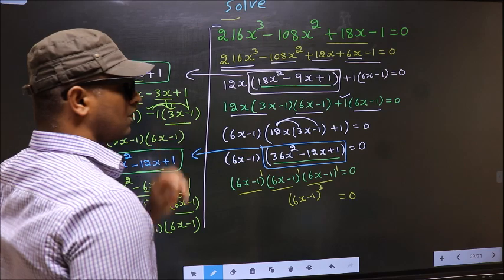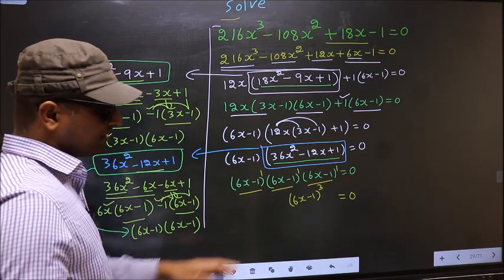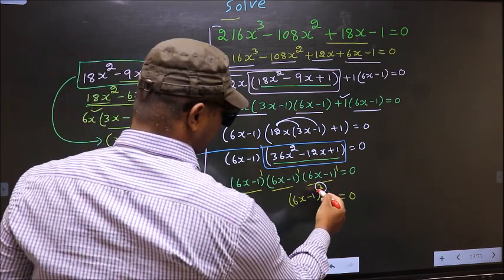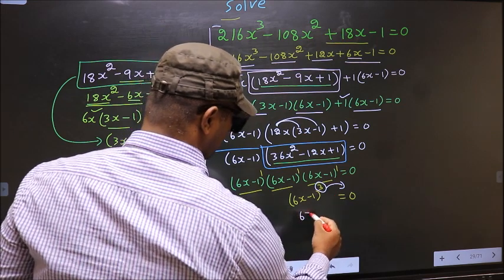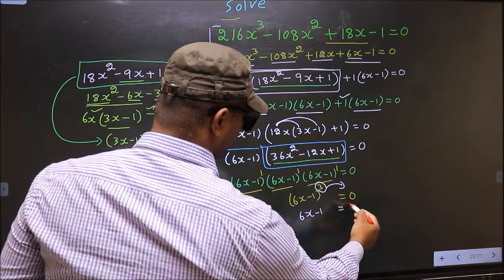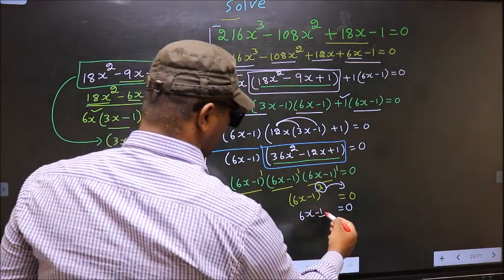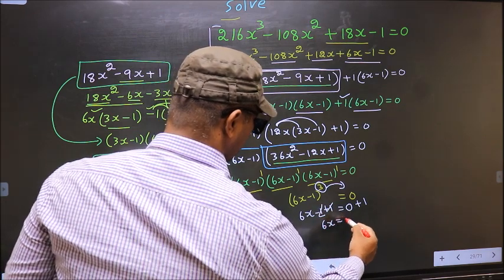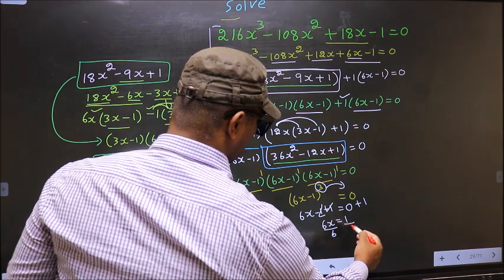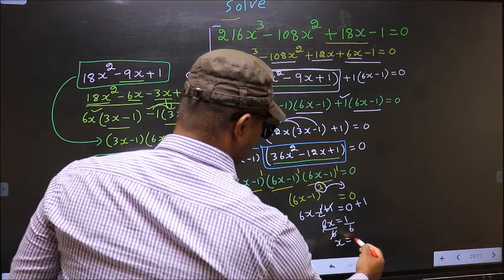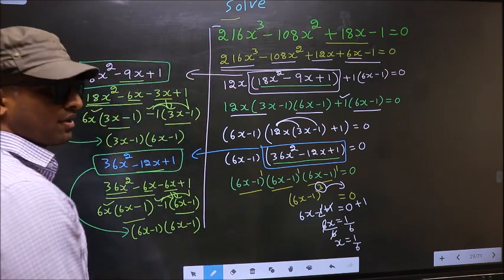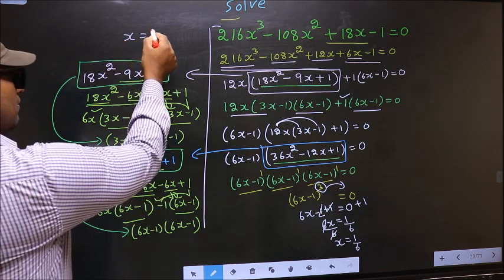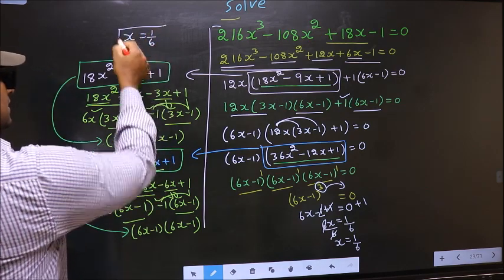They told us to solve, so we should find the value of x. Shift the cube to the other side: it becomes cube root of 0, which is 0. Now remove minus 1 by adding 1, so this cancels out and you get 6x equal to 1. Divide by 6: x equal to 1 by 6. So we got only one value for x, that is 1/6. This is our answer.